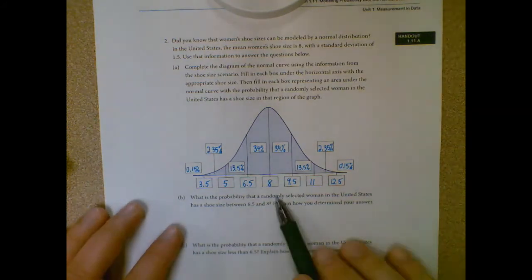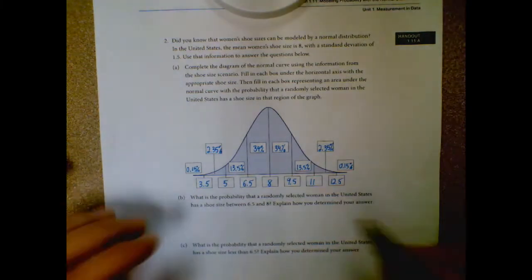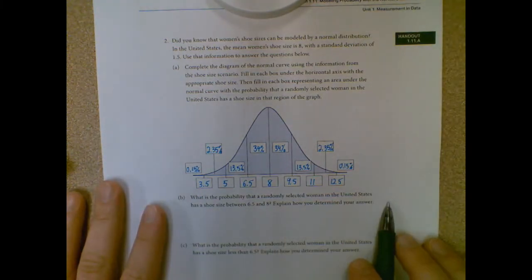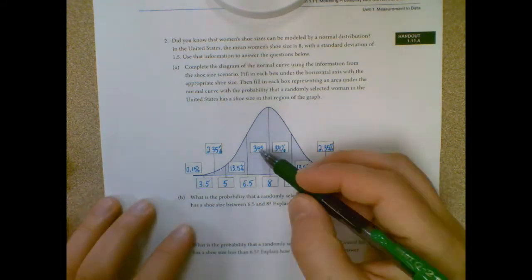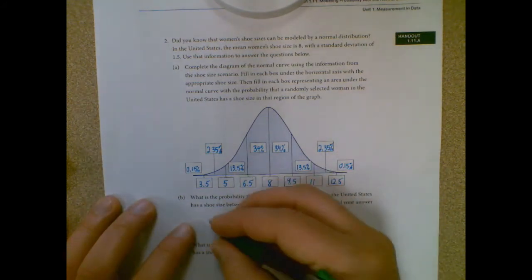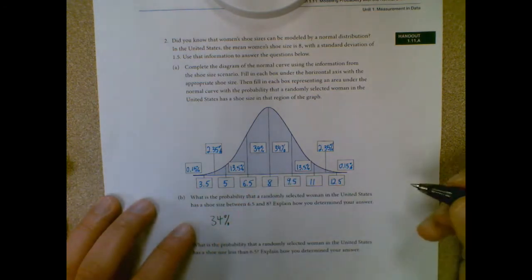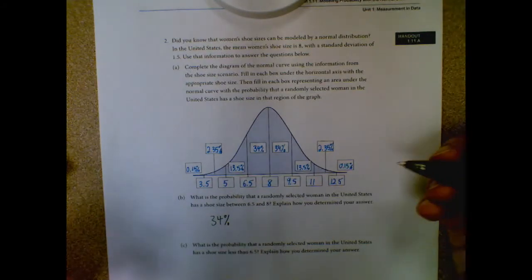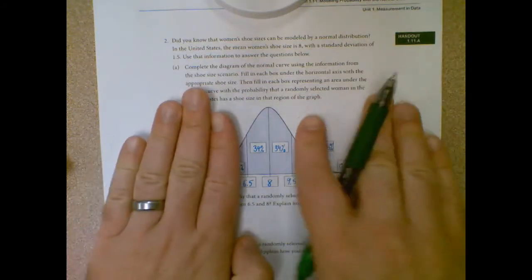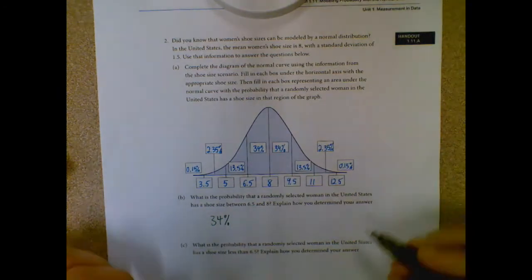Moving right along. What is the probability that a randomly selected woman in the United States has a shoe size between six and a half and eight? I sort of mentioned that already. So we're looking between six and a half and eight. That's one block here. So that's 34%. Explain how you determined your answer. You can walk through and say, well, the whole thing was 68. So we divide it in half. However you want to explain that.